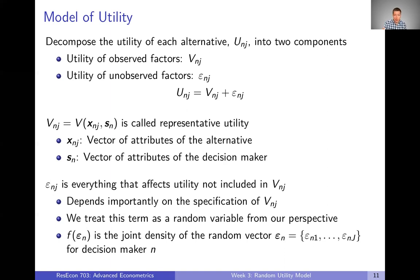Epsilon is going to be everything that affects utility that we're not putting into V, the representative utility. One important thing to point out is that epsilon depends on the specification of capital V. As we observe more data and put more things into capital V, there are fewer things implicitly buried inside epsilon. Alternatively, if we don't observe very much data, there's really a lot sitting in this epsilon term — this utility of unobserved factors.